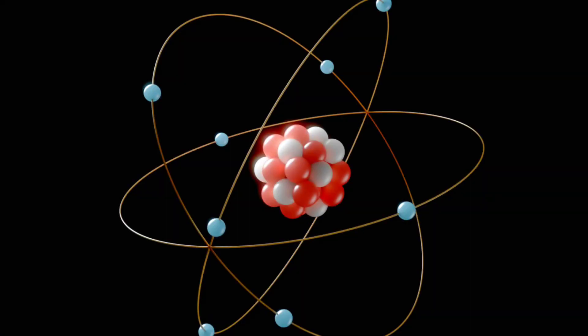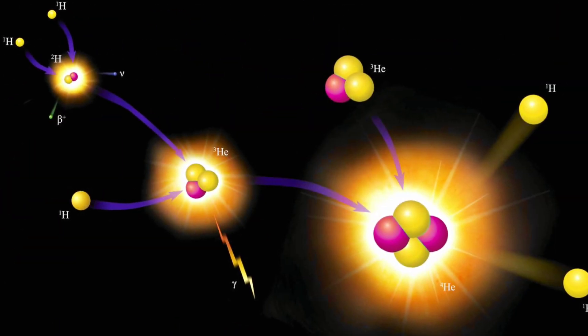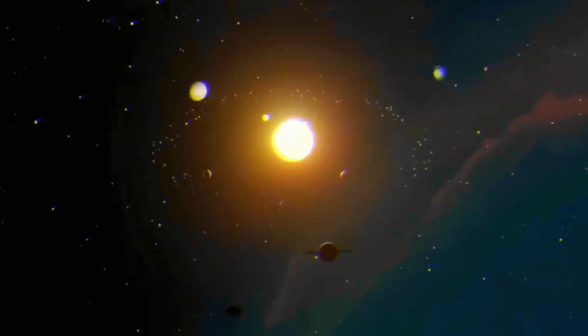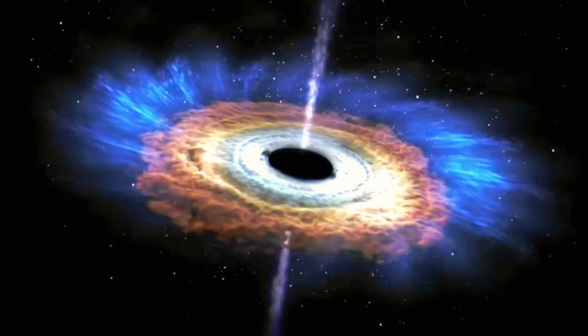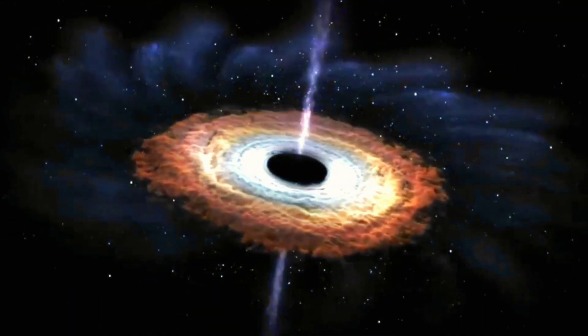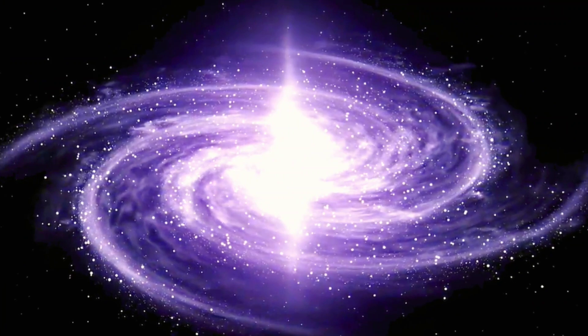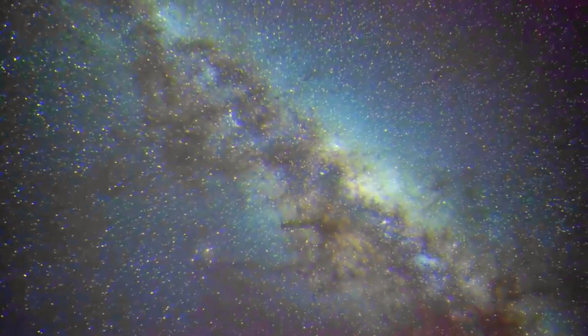Quarks, electrons, muons, taus, neutrinos, photons, gluons, heavy bosons W+, W-, Z0, and the Higgs, and all of their antimatter counterparts make up this list of primary particles. Despite the name, the empty space that is left after removing them isn't actually empty. The only thing that is left is the quantum field, the all-pervasive background energy of the cosmos.